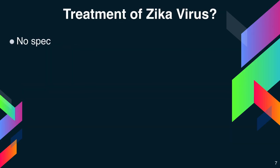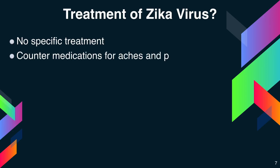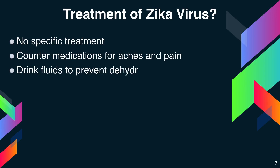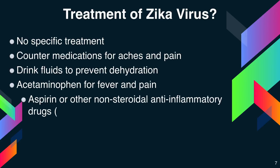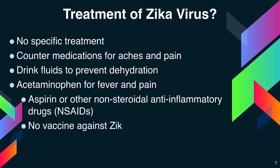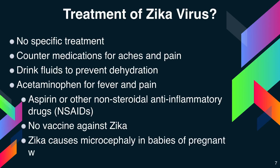There is no specific treatment option for Zika virus as of now. Counter medications are prescribed for aches and pains. Doctors may prescribe drinking lots of fluids to prevent dehydration, and acetaminophen for fever and pain. Aspirin and other non-steroidal anti-inflammatory drugs may be prescribed by a doctor. There is no specific vaccine yet released against Zika virus.